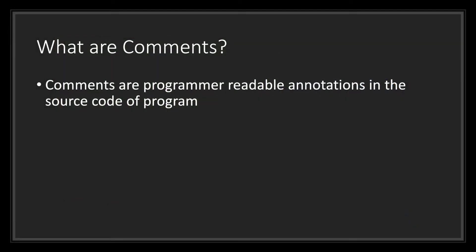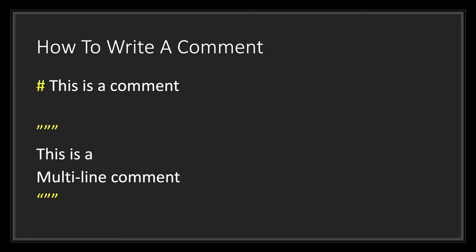So what exactly are comments? Comments are programmer-readable annotations in the source code of a program. Writing a comment is fairly straightforward in GDScript. There are two ways to write a comment. The first way is by using the pound sign symbol. This is called a single-line comment. Anything written after the pound sign symbol will be considered a comment and not part of the actual code. This means you can write both code and a comment on one single line.